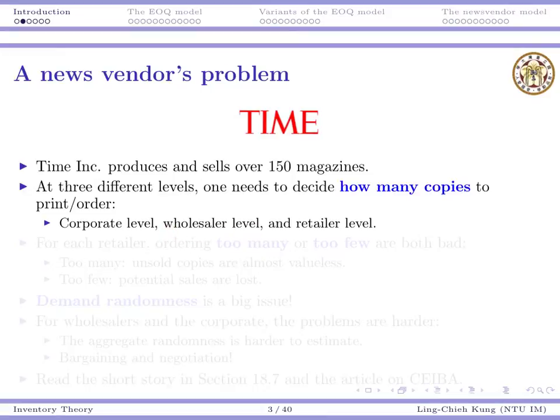Regional wholesalers need to decide how many to order because they need to fulfill downstream retailers. And then for each retailer, the retailer also needs to decide how many to order so that each week, when consumers come into the store, there is enough supply to sell to them.